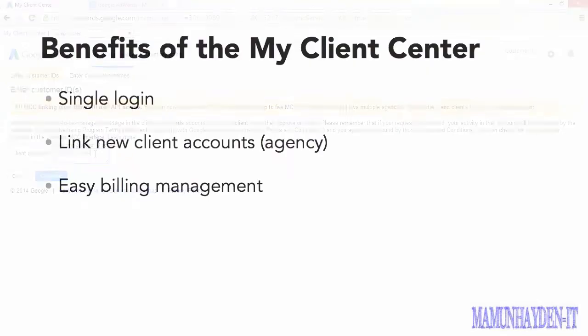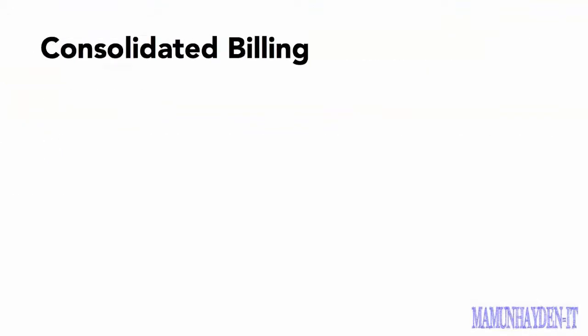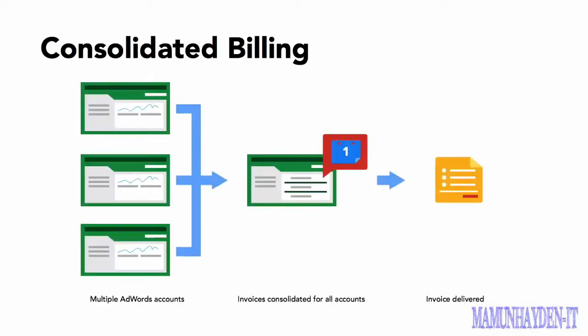From a billing perspective, if you're using the Invoicing Payment option, you can contact your Google representative and have them enable Consolidated Billing for you. First, you'll put all the AdWords accounts that you'd like to be consolidated into your MCC, and then you can choose to bill the costs of each account to that single invoice.